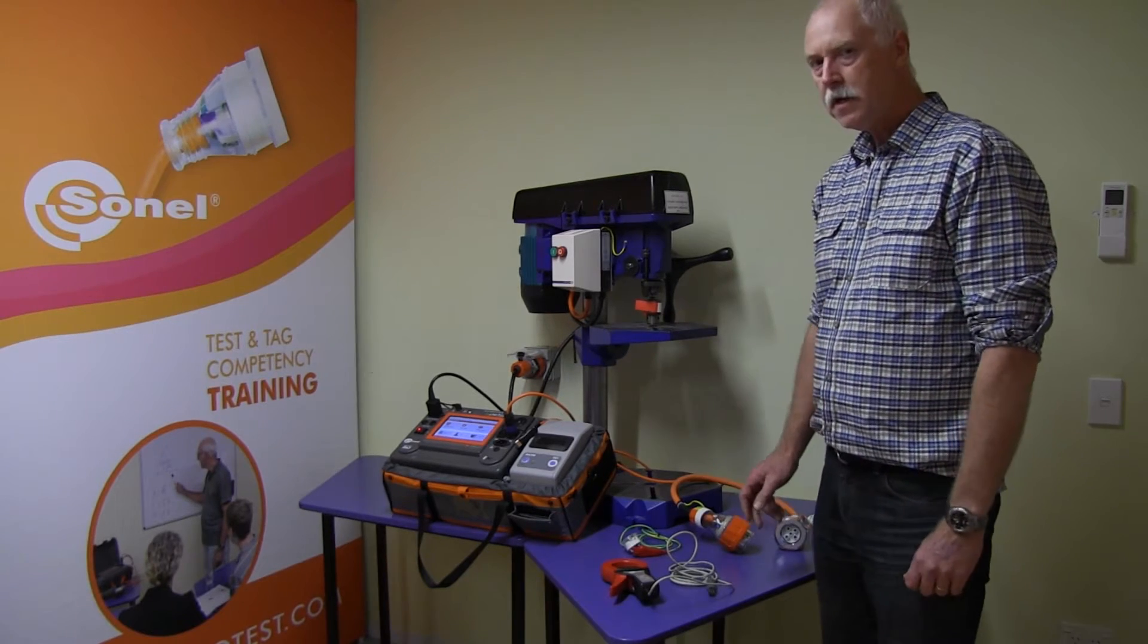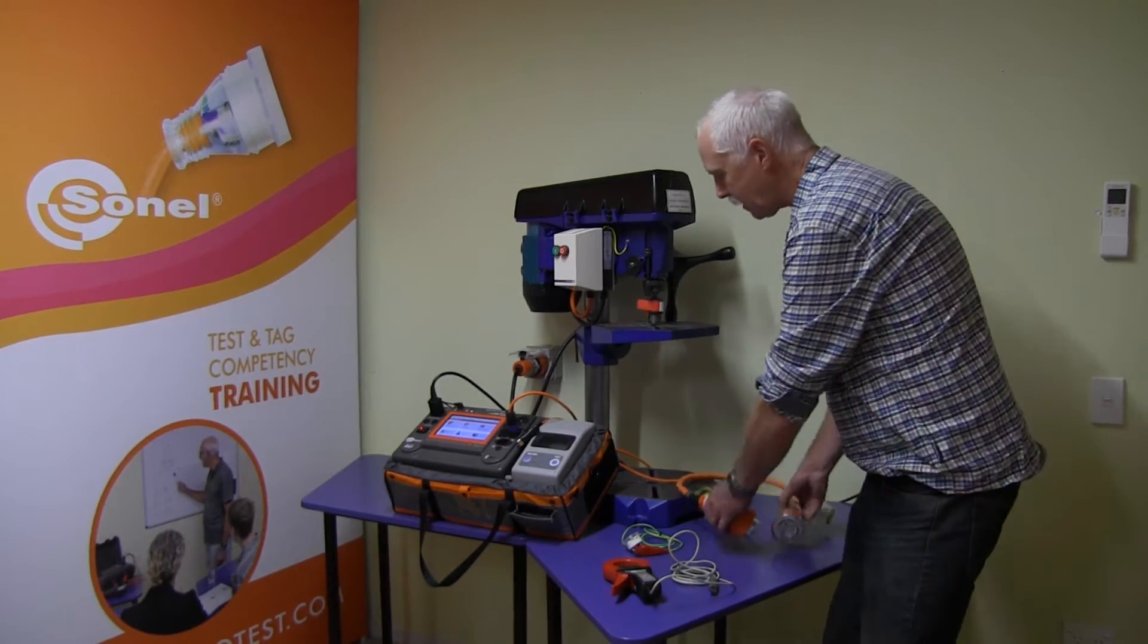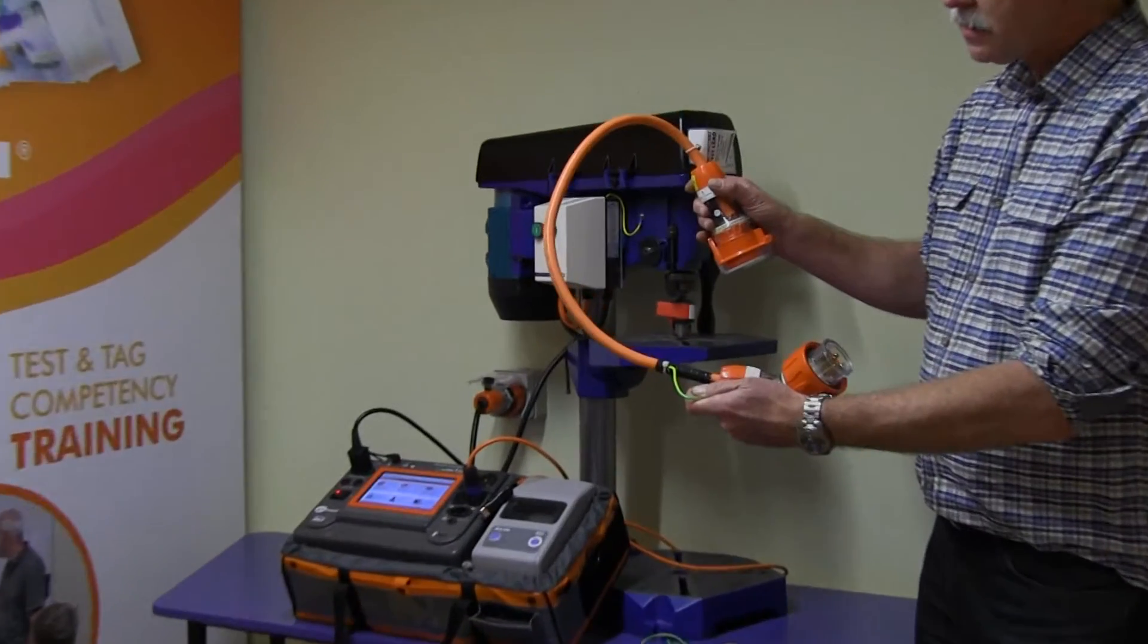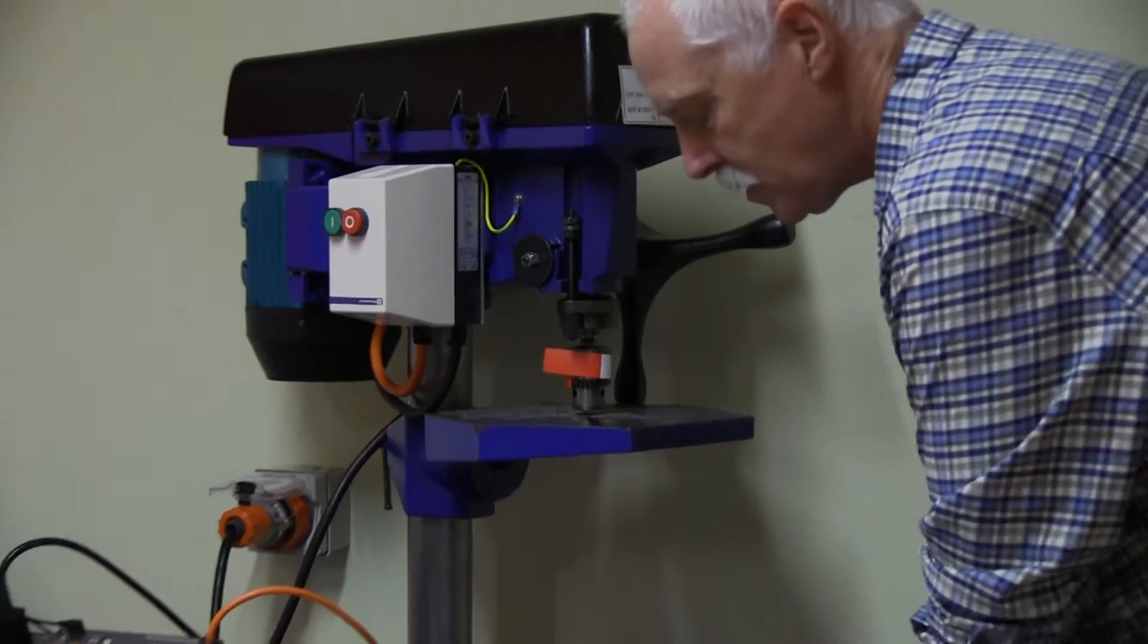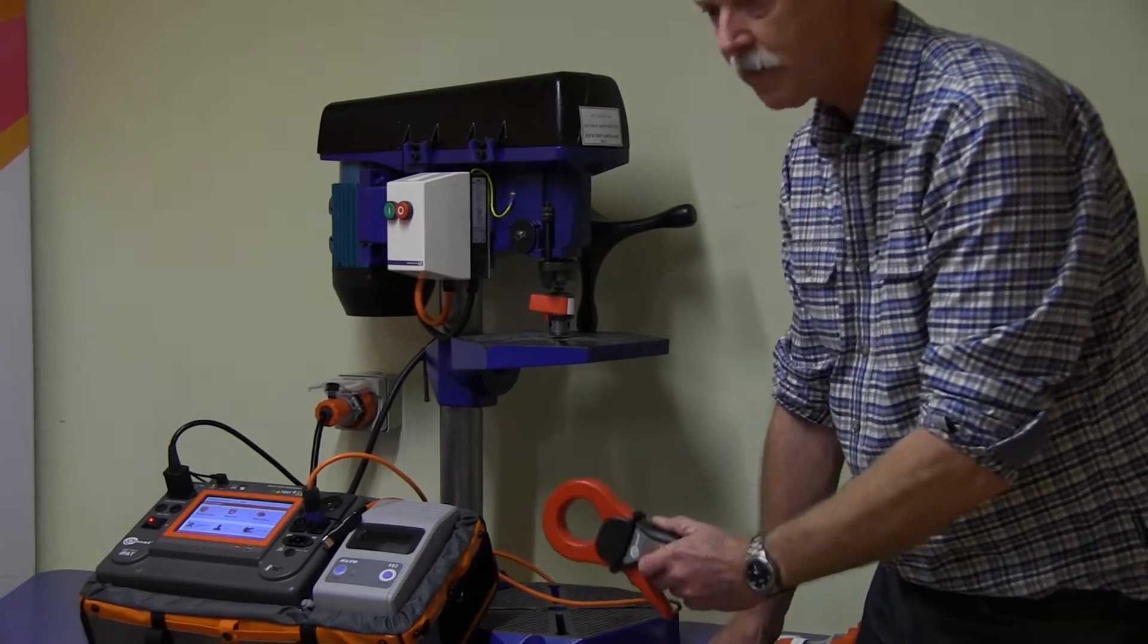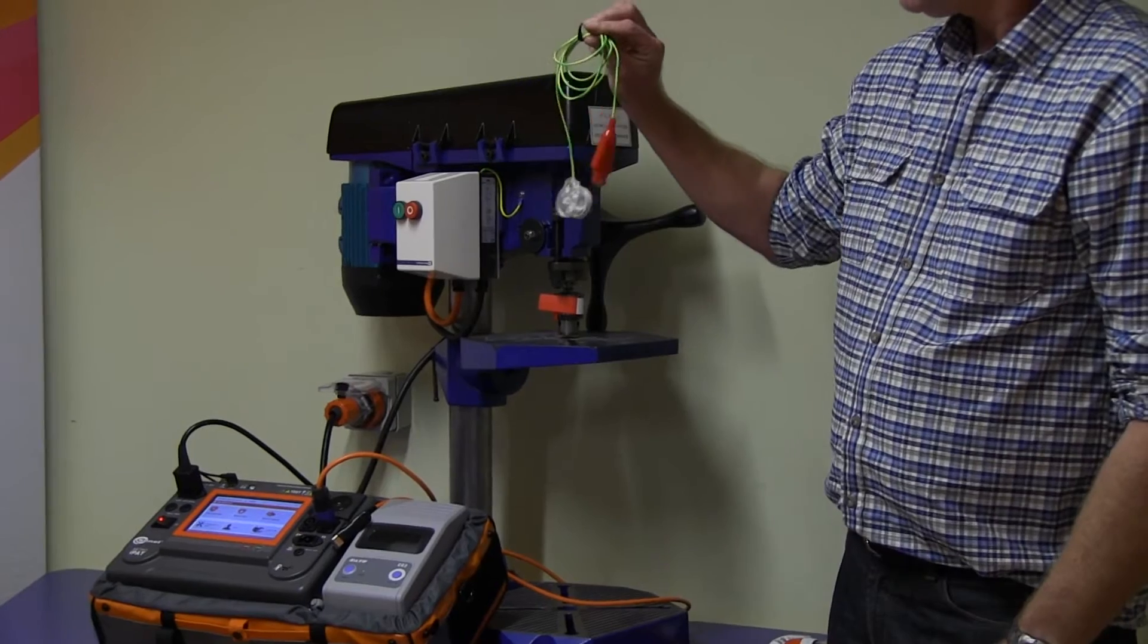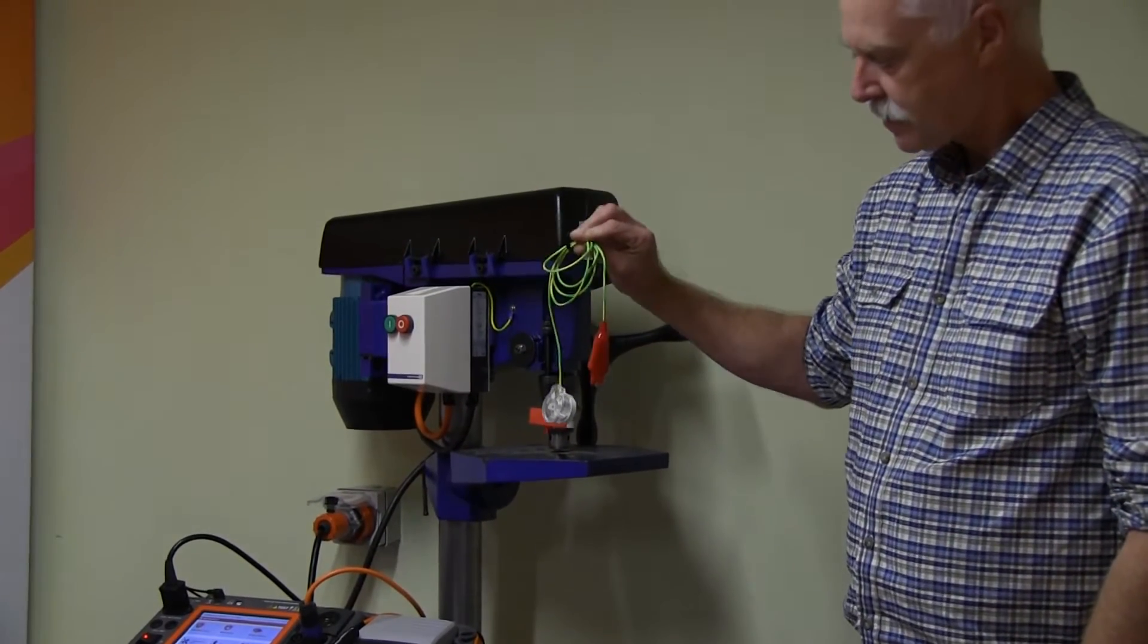To do that we need a suitable PAT tester, an adapter lead with the earth separated out, a clamp that will measure leakage around the adapter lead, and an extra earth wire. I'll set this up now and then we'll be back to do the testing.